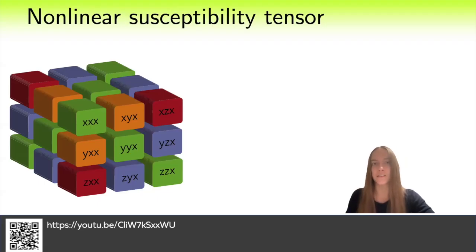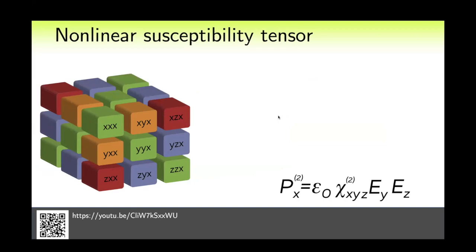The chi tensor, as a third-rank tensor, has 27 components and we can depict it as a cube. But this is usually very inconvenient, so usually a slightly different notation is used.